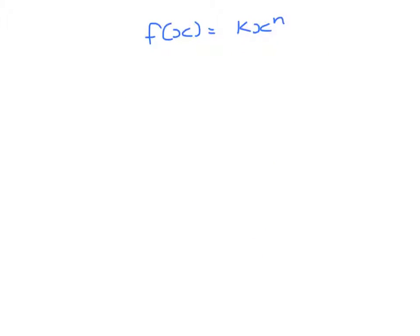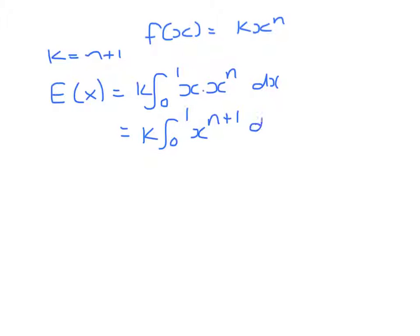Then asked to find an expression for E of x. I'm going to leave the k in and substitute at the end. So E of x is the integral from 0 to 1 of k times x, times x to the power n. So we're integrating x to the power n plus 1. If we add 1 to the power,